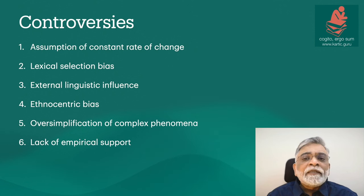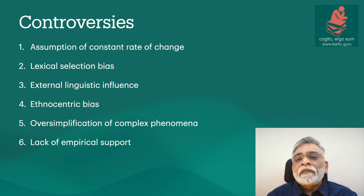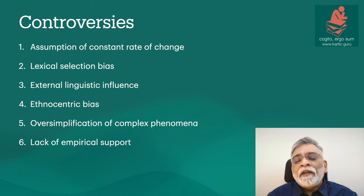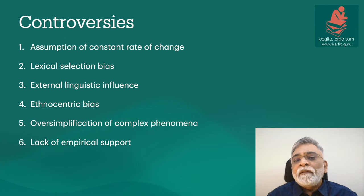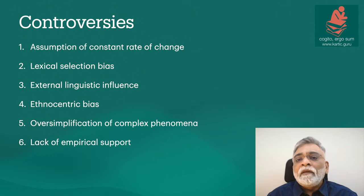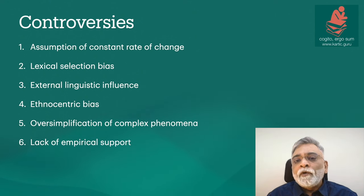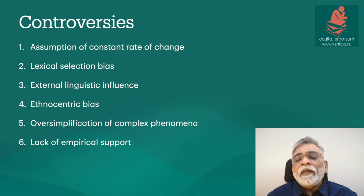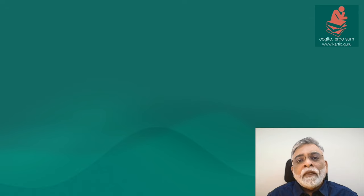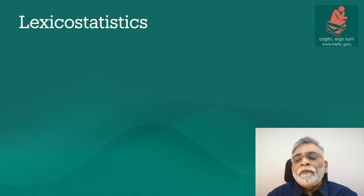The sixth criticism is a lack of empirical support. Despite its quantitative claims, glottchronology lacks empirical validation. Attempts have been made to calibrate the linguistic clock against known historical events, but these efforts have often produced inconsistent results, further weakening the method's credibility.